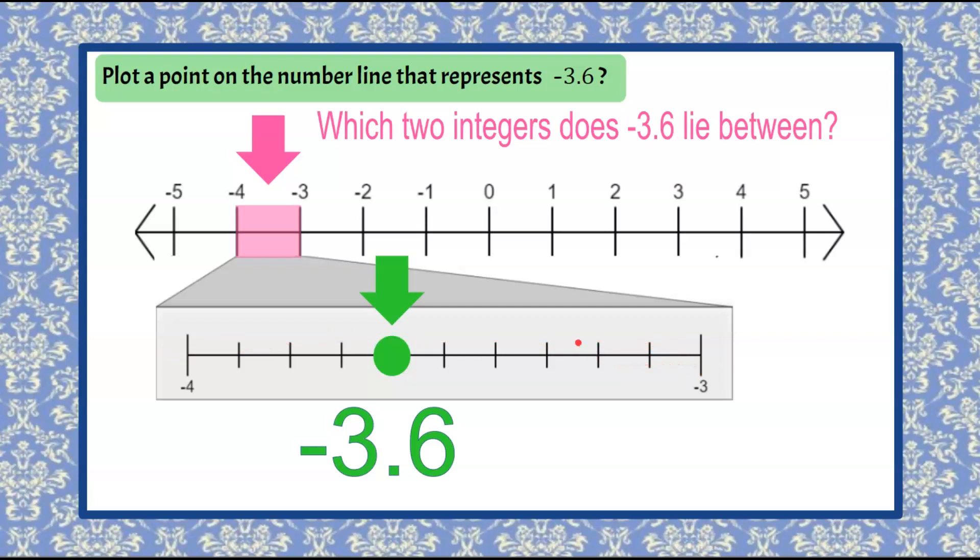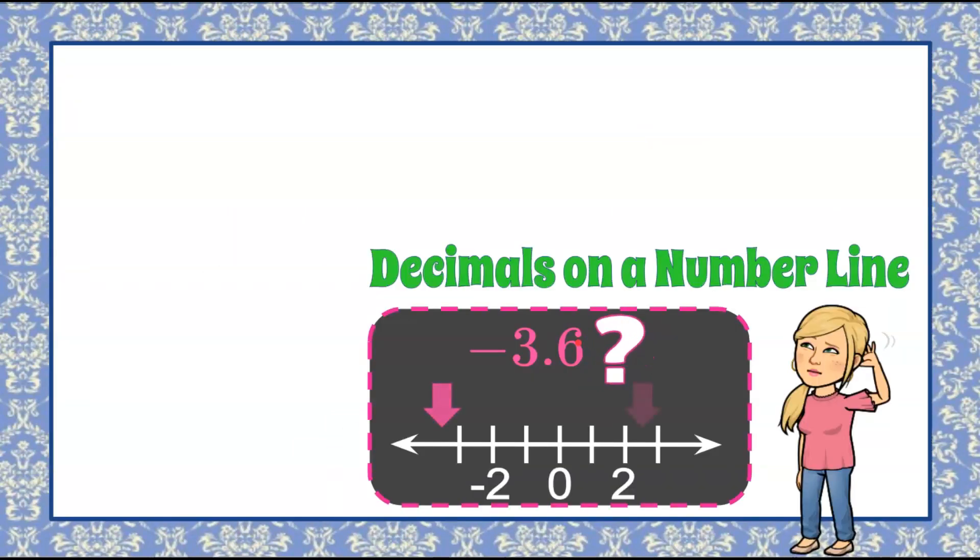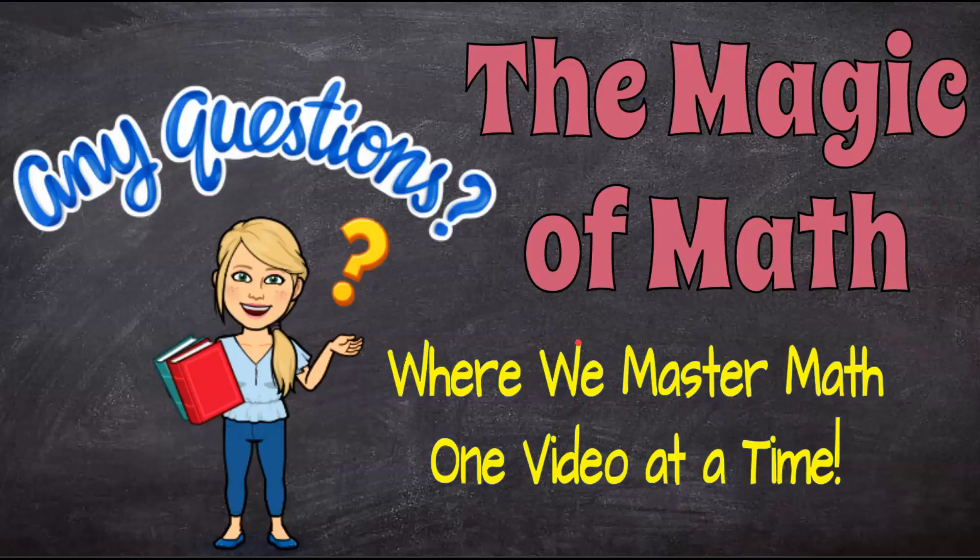But there you have it. That's how you plot a rational number on a number line. I thank you for joining me today to determine how to identify the correct placement of a decimal on a number line. And that's the Magic of Math, where we continue to master math one video at a time. I hope you'll come back soon, and have a great day.